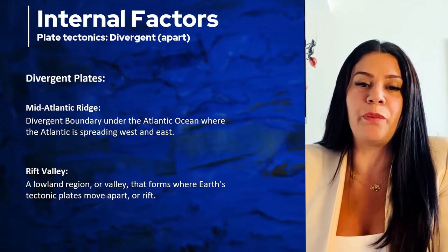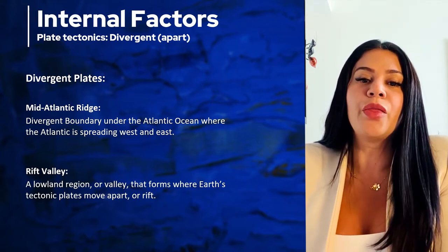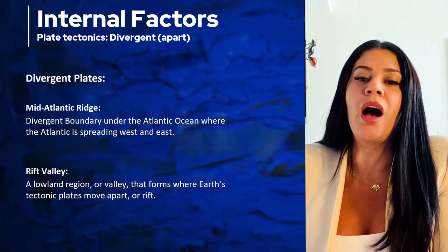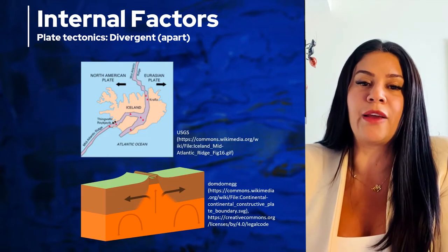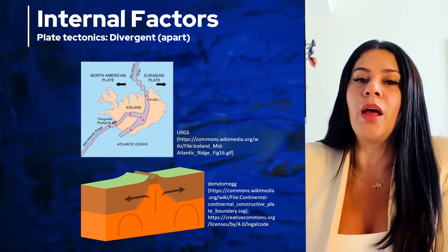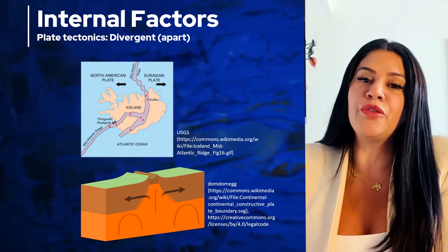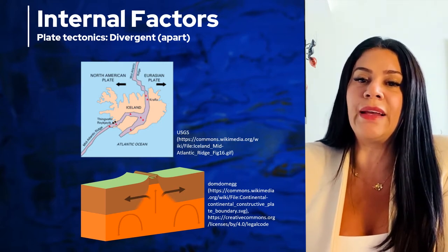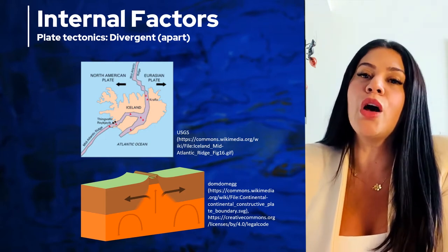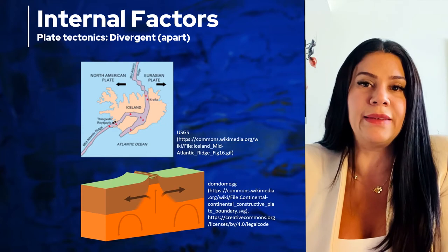Diverging plates are created through magma convection. The longest of these divergent boundaries is actually underneath the Atlantic Ocean — something we call the Mid-Atlantic Ridge. On land, a divergent boundary will create what is known as a rift valley. The longest rift valley is the Great Rift Valley in Africa.